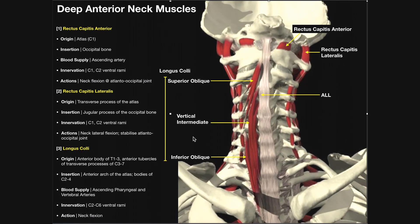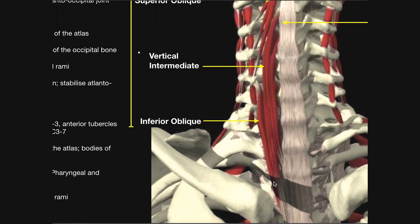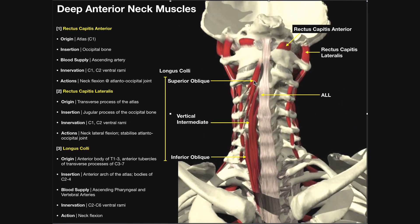The third and smallest component is the inferior oblique part. Its inferior attachment is roughly on the anterior body of T3, and it ascends laterally to have its superior attachment on the anterior tubercle of the transverse process of C5. Note that the inferior oblique's superior attachment is at C5, whereas the lowest fibers of the superior oblique have their inferior attachment also at the anterior tubercle of the C5 transverse process.